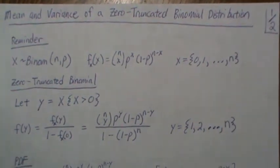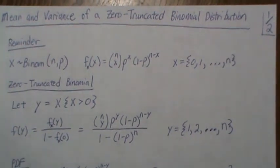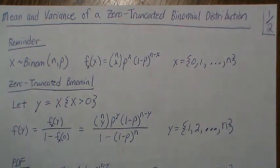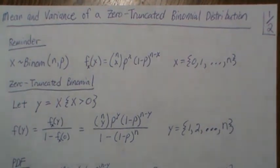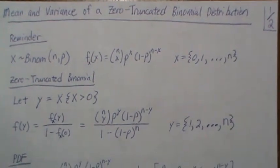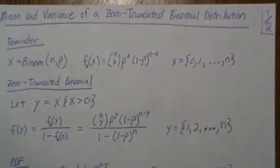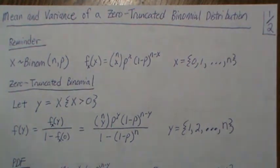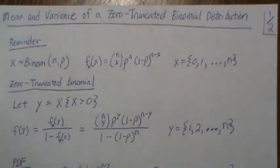So it goes from 1 to n as opposed to 0 to n. In the real world there might be a case where you can't observe nothing. You have to see one or more events or outcomes to even measure it.